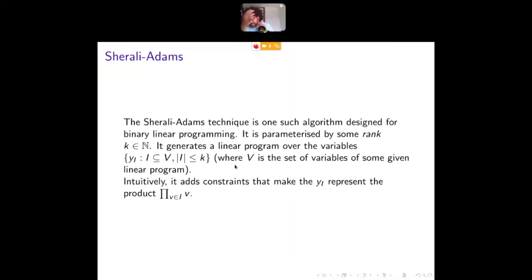And why does it do this? What is it trying to do? It's a linear program over these subsets and it adds constraints that try and make these subsets behave as if they were the product of the binary variables in V. So we try and kind of hack in some non-linearity and of course we can't succeed, but we can get somewhere.